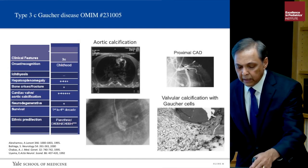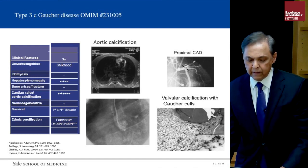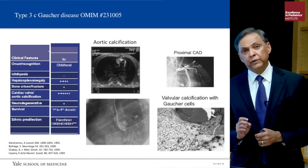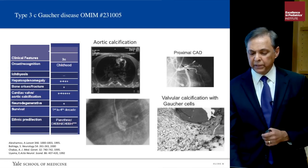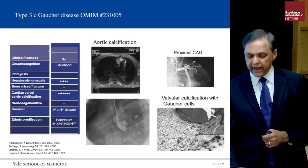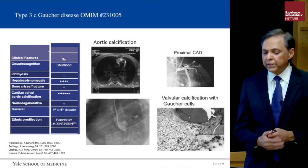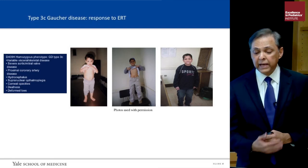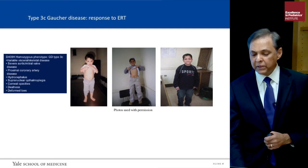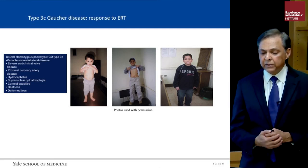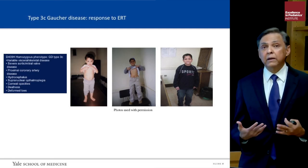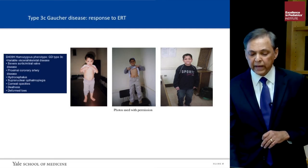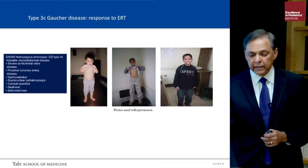Type 3c Gaucher disease is a unique type with a specific OMIM designation. Its hallmark is cardiac involvement — calcification of the aortic valve, the aorta, and proximal coronary artery disease, with valvular calcification and Gaucher cells. A child with type 3c had hepatosplenomegaly and cardiac abnormalities with a good response to enzyme replacement therapy but later succumbed to cardiac manifestations. Every patient with type 3c Gaucher disease is homozygous for the D409H mutation.